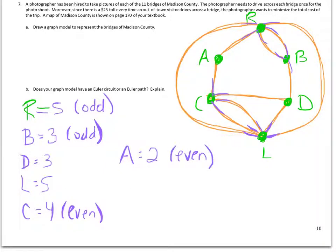Now the theorem from the book, Euler's theorem, says that in order to have a path, in order to have a circuit, all of the vertices must be even. So I definitely don't have a circuit. Euler circuit, no.